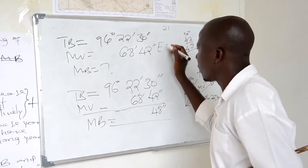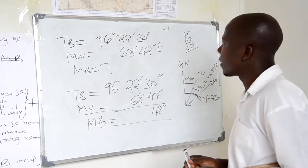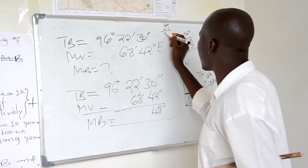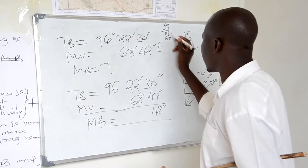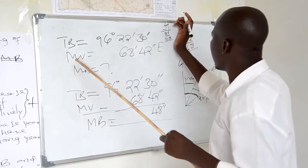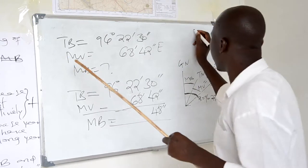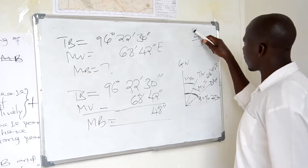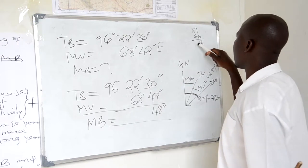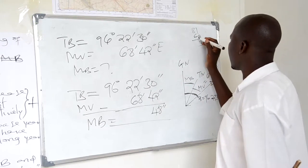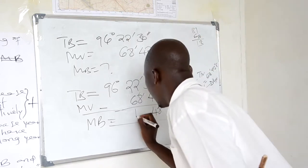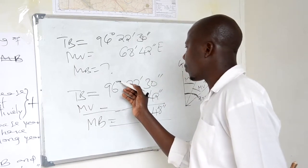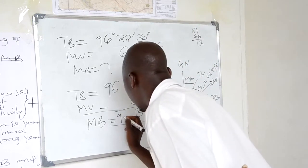21 minus 68 will be impossible to subtract. Therefore, we have to borrow 1, which itself will be 60. 60 plus 21 gives 81. 81 minus 68 will be 13. Here remain 7. 70 minus 60 which will be 1 degree — which we have been taking — therefore we mean here 95 degrees.